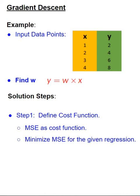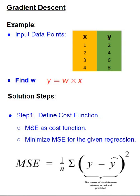So our optimization goal is to minimize MSE for the given regression y equal to w times x. Let's remind ourselves what MSE is: it's the average of square difference between the actual value and the predicted value.